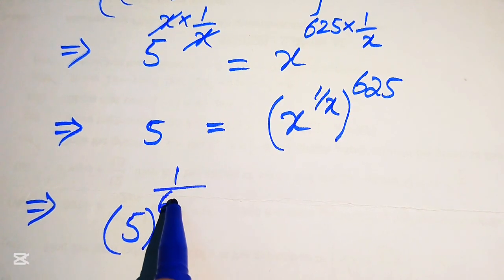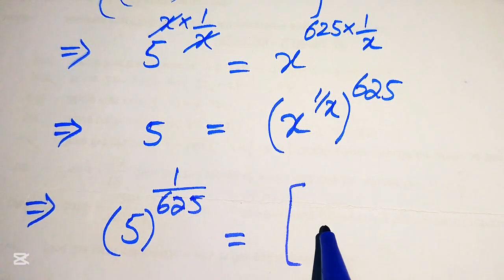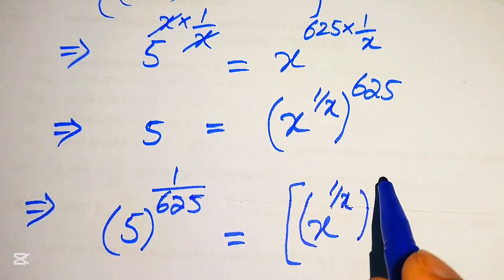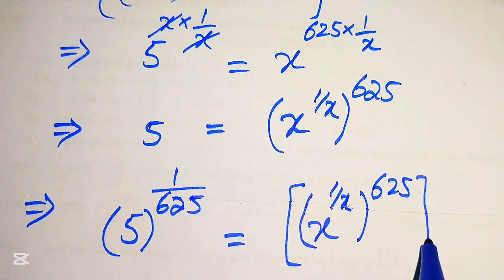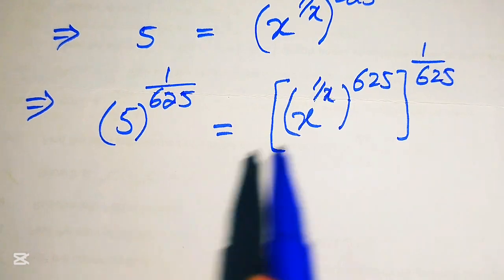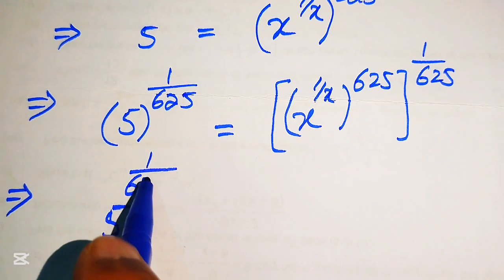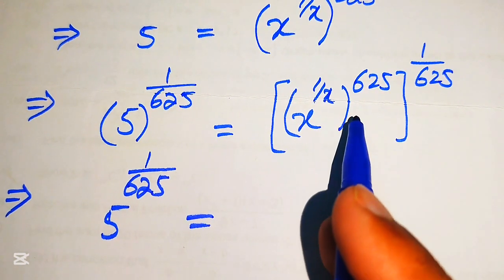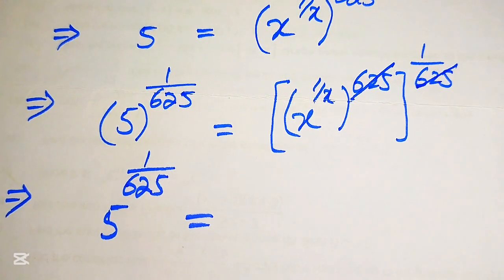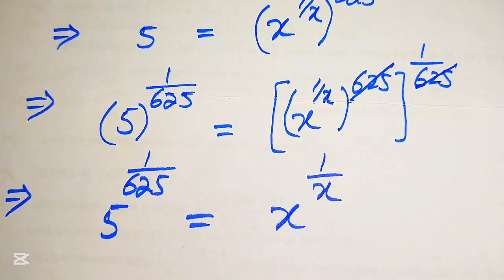We apply the 1/625 power on both sides. The left side becomes 5 to the power of 1/625. On the right side, using the exponent law, 625 multiplied by 1/625 cancels out, leaving x to the power of 1/x. So we have 5 to the power of 1/625 equals x to the power of 1/x.